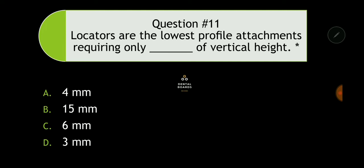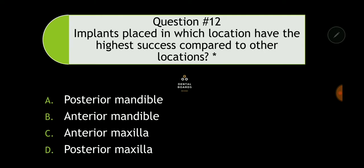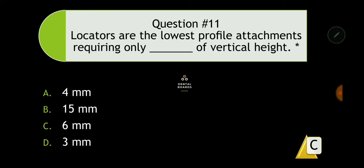Review question number 11: Locators are the lowest profile attachment requiring only how many millimeters of vertical height? You need to know these numbers. The answer is C — locators are the lowest profile attachment requiring only six millimeters of vertical height.